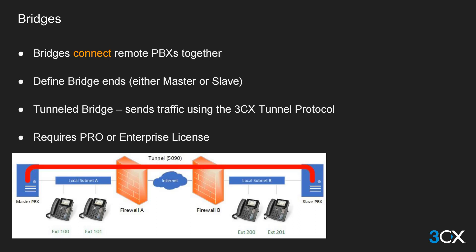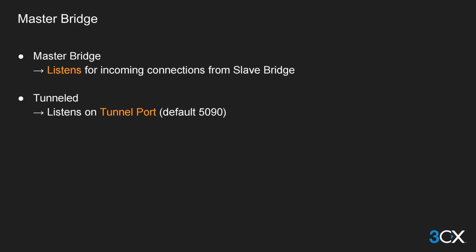Connecting two or more 3CX systems together via bridges requires at least a Pro edition license. The master bridge will control the connection between the two PBXs and will listen for incoming connections from the slave bridge. If the connection is tunneled, it will listen on the PBX tunnel port, which by default is 5090.